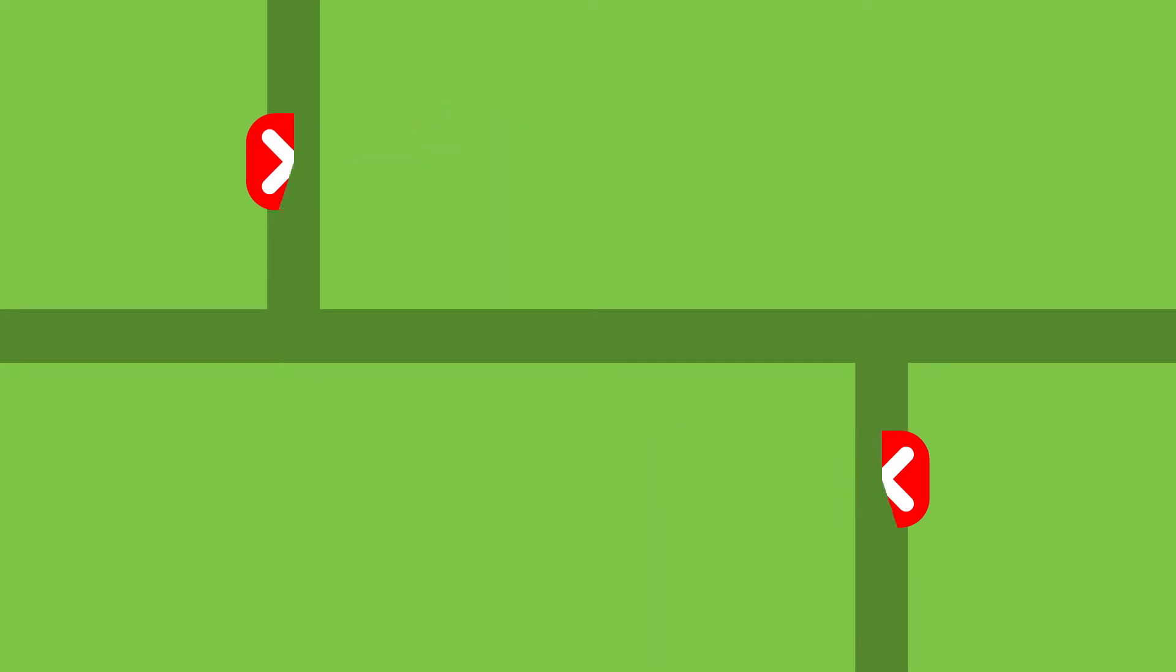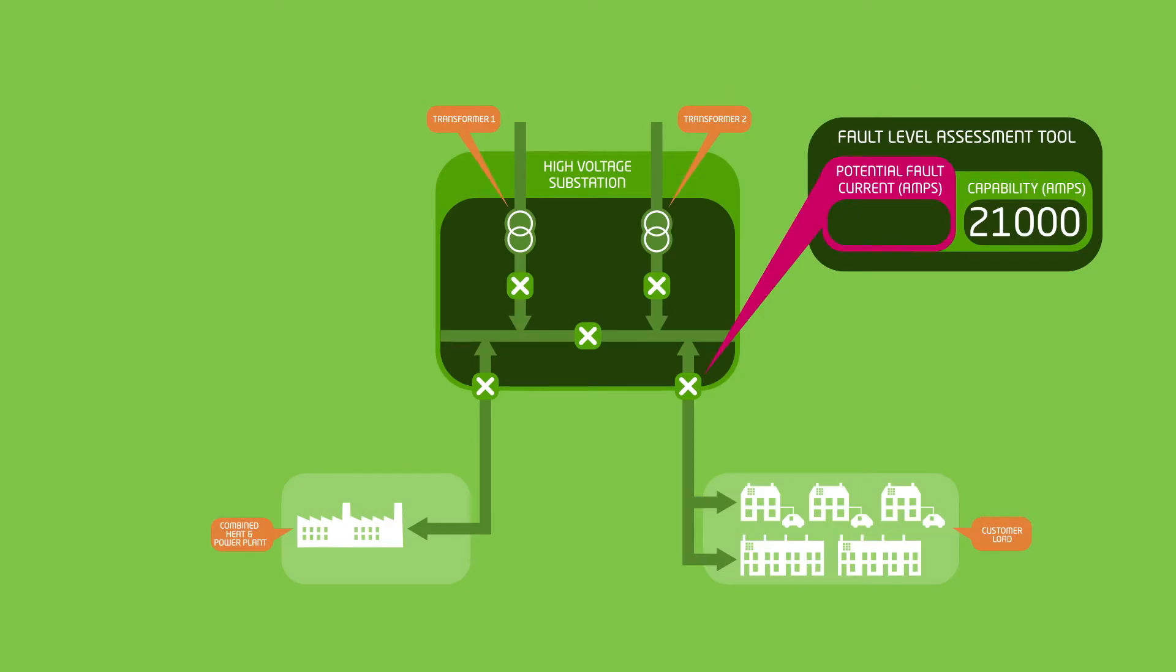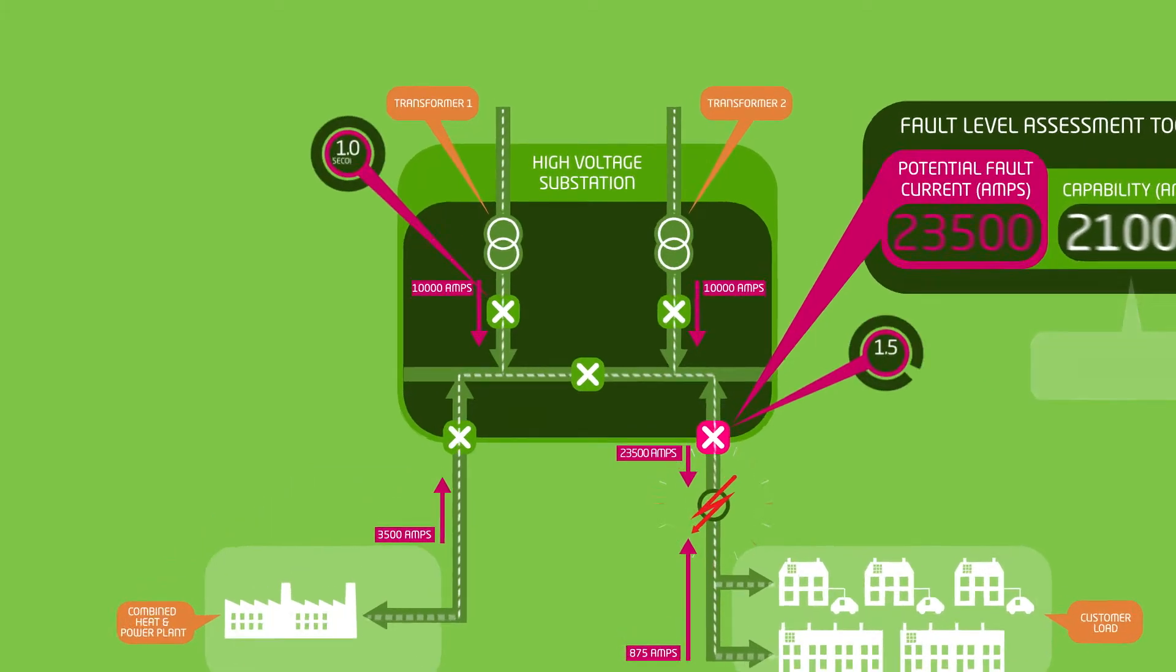Adaptive protection changes the order in which these circuit breakers trip. In this example, the equipment on the network can handle a current of 21,000 amps for three seconds before it might be damaged.